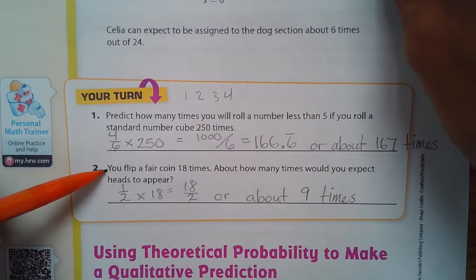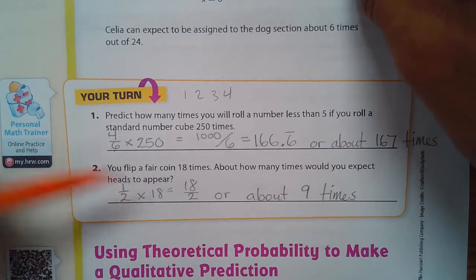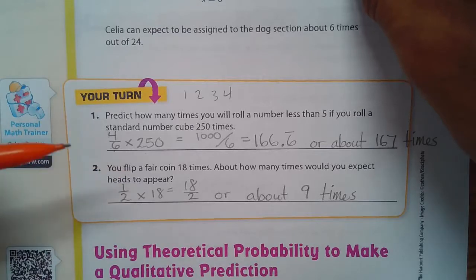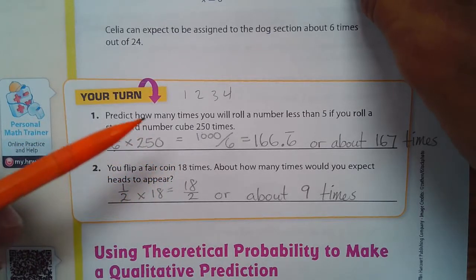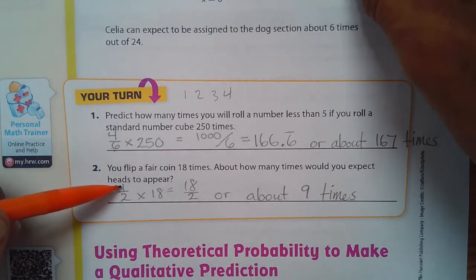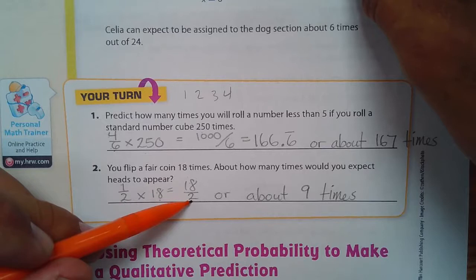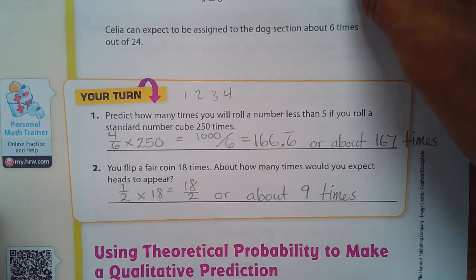Next, you flip a fair coin, which really you just flip a coin. Fair coin means both sides have equal weight. 18 times about how many times would you expect heads to appear? Well, you would expect it to happen half the time. But I went ahead and just formally did one half times 18. One times 18 is 18 over two and 18 divided by two is nine. So I expected to happen nine times.